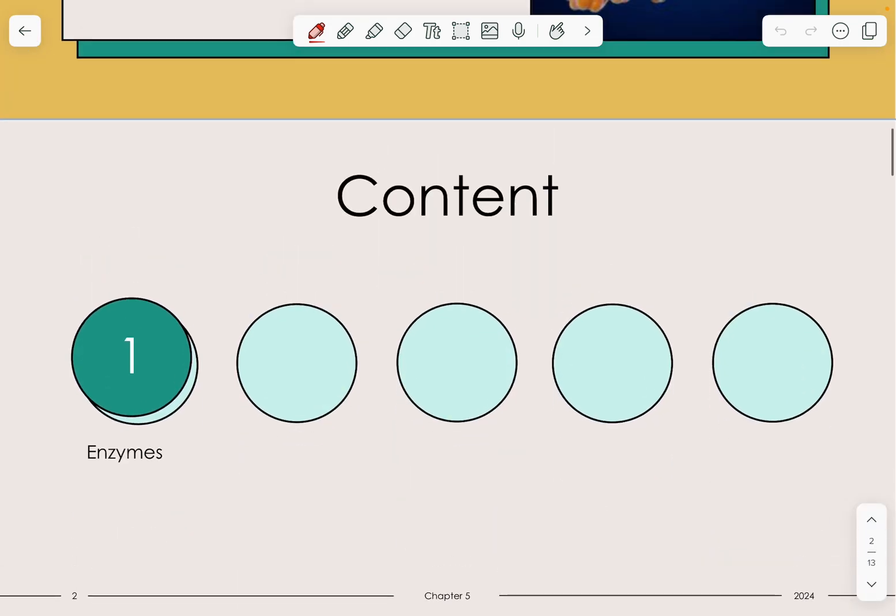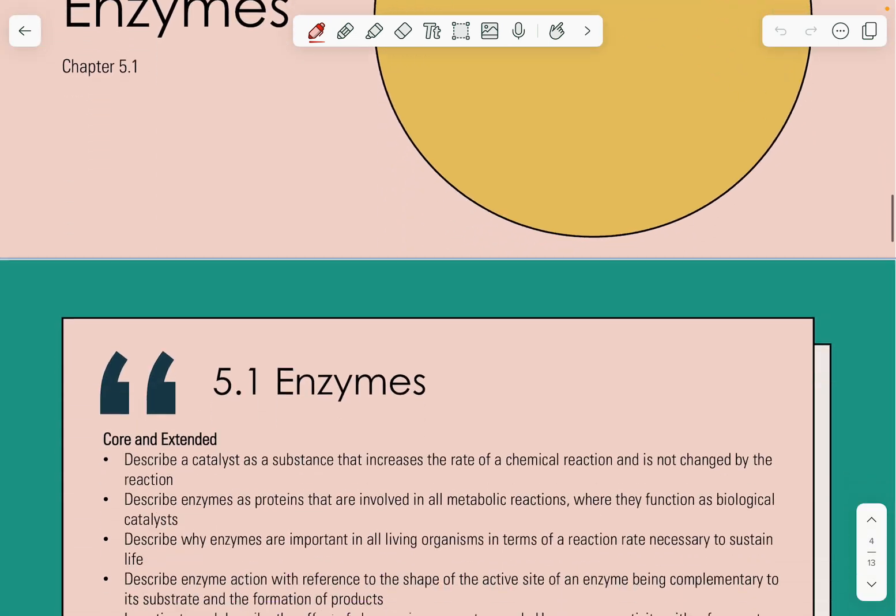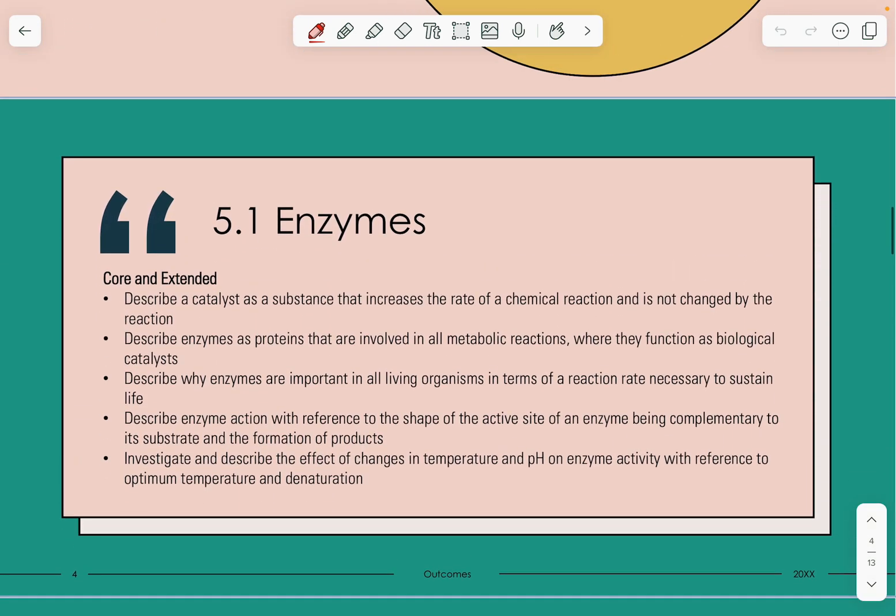Today the content is very short, so we're going through enzymes and the learning outcomes. This includes describing what a catalyst is, what an enzyme is and why enzymes are important, and describing enzyme action with reference to the shape of the active site being complementary. We'll also investigate and describe the effects of changes in temperature and pH.